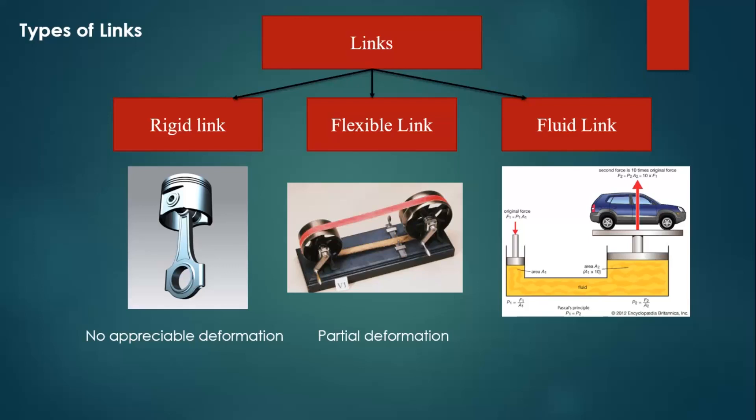The second one is flexible link. A flexible link is a link which is partially deformed in such a way that it does not affect the transmission of motion. There are many practical examples - see the picture. It gives belt drive, rope, chain, and springs, which are deformed considerably while transmitting motion but do not affect the transmission of motion.